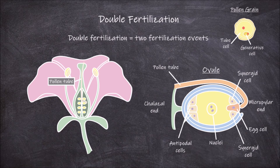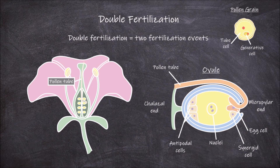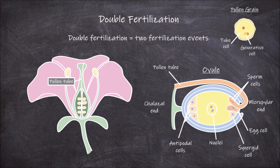Once arriving at the embryo sac, the pollen tube causes the death of one of these synergid cells, and then uses the space where it had been as its way into the embryo sac. As the pollen tube is growing, the generative cell also divides to form two sperm cells. These sperm cells move down the pollen tube and into the ovule.